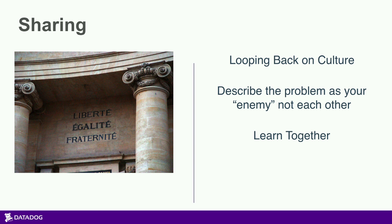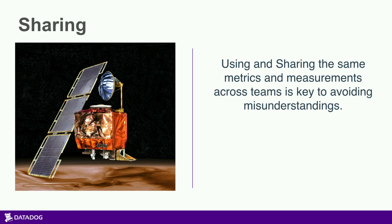Sharing loops back on culture — looking to learn together, describing problems as the enemy rather than other teams in the organization. If there's a memory leak, it's not the developers' fault — you're not blaming the developer for the crash; you're blaming the memory leak and collaborating to solve it. A good example here is the Mars Climate Orbiter: sharing isn't just about sharing data, but making sure we're using the same language.